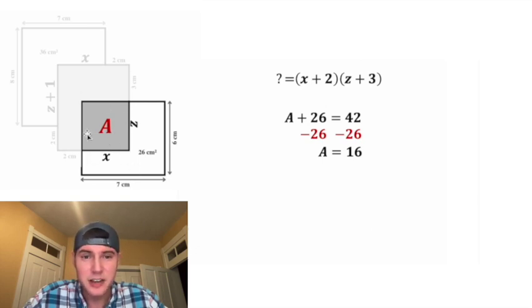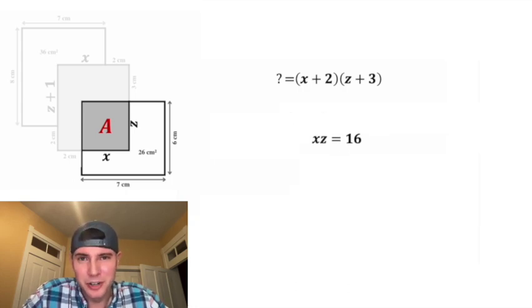And A is this rectangle made up of x times z, so really we found out that x times z equals 16. And that's really what's most important here.